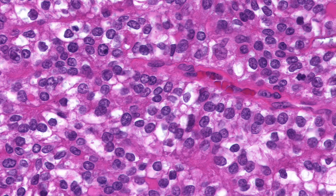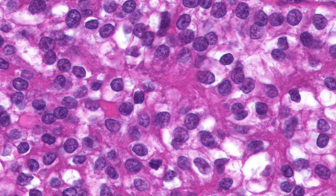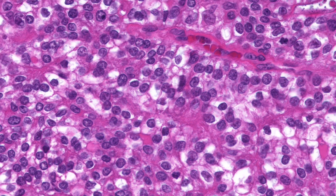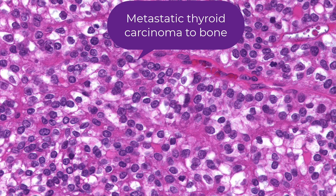Some cells may have fairly eosinophilic cytoplasm and perhaps a groove if you look carefully, and they may be keratin positive — some chondroblastomas are keratin positive. But this particular example is not a chondroblastoma; this is a metastatic thyroid carcinoma.